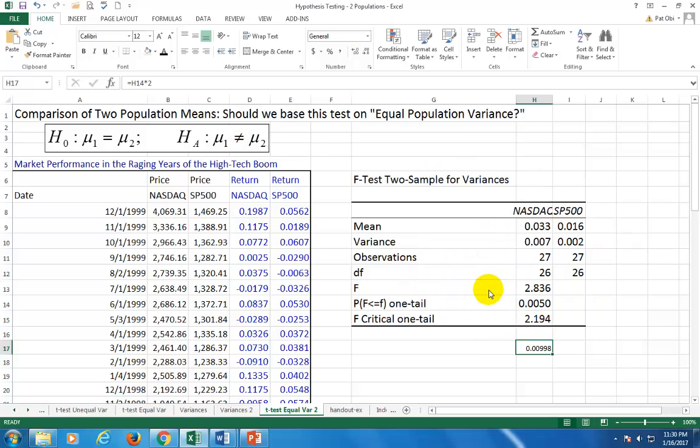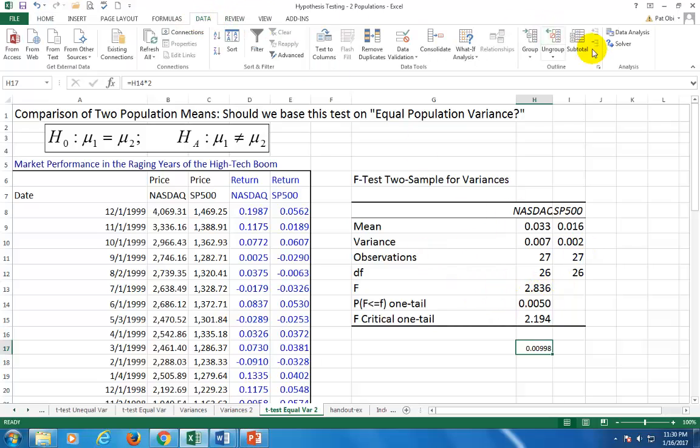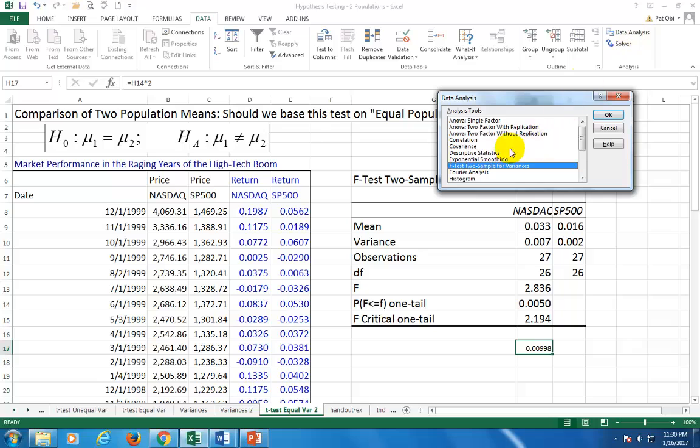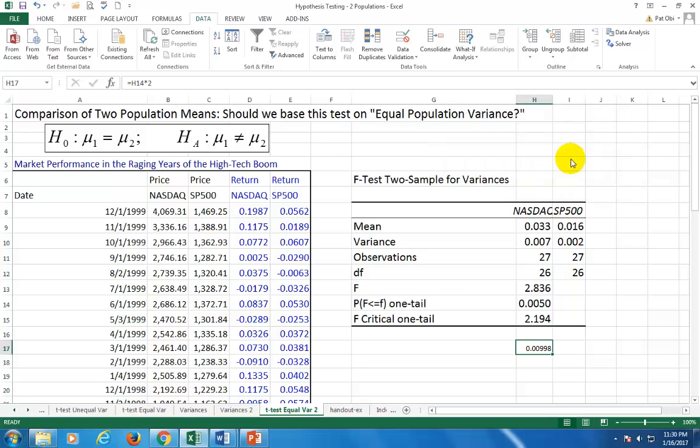Now, this is a test for variances. So now, based on this, when you go back here to perform your T-test to compare the means of the two populations, when you scroll down here, you should choose this guy right here, assuming unequal. T-test to sample assuming unequal variances. See what I did there?